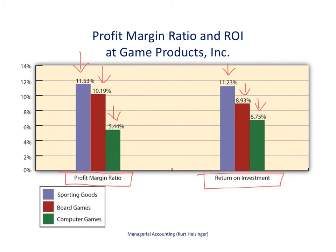In both measures, the sporting goods division is performing the best. Please take a look at the detailed calculations — I have a separate video for the profit margin ratio and a separate video on how to calculate the return on investment ratio to see where these numbers come from.